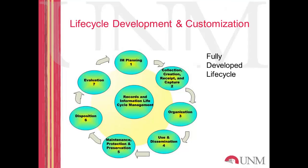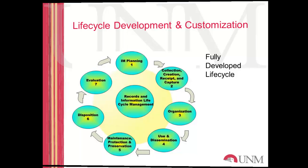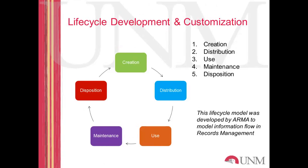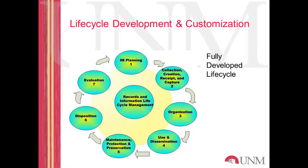This is a more fully developed records management model that shows both the core information life cycle in a large organization and adds, towards the end, maintenance, protection, and disposition — the records management functions. You can see between the two that there are added steps in the life cycle process, and that in any life cycle model there's more than just the four basic stages outlined in the JISC documentation that you're going to be reading.